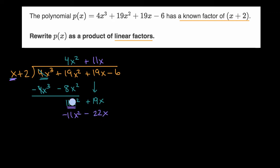You need to subtract these from what we have in that teal color. And we are left with 19 - 22 of something is -3 of that something. In this case, it's -3x. And then we bring down that -6.